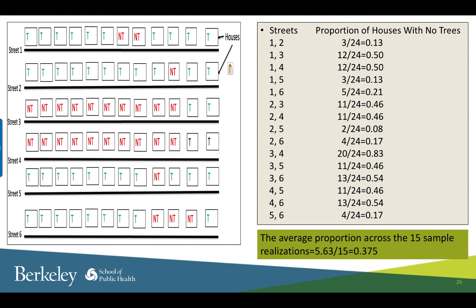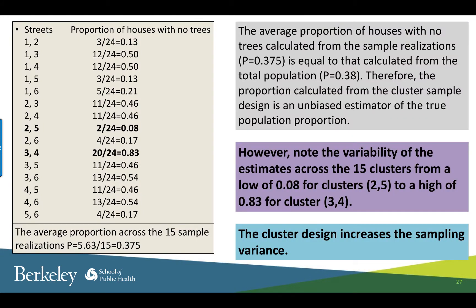Across the 15 sample realizations, we obtain an average proportion of 0.375 or 37.5 percent. So you can see that the average proportion of houses with no trees calculated from the sample realizations is equal to the proportion calculated from the total population. However, note the variability of the estimates across the 15 combinations — there is a lot of variation. For example, the proportion varied from a low of 8 percent for clusters 2 and 5 to a high of 83 percent for clusters 3 and 4. So you can see that in a cluster design, the sampling variance is increased.